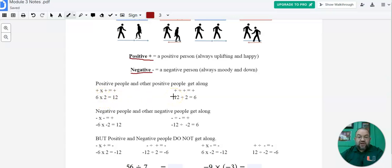Same thing with division. Positive 12 divided by positive 2 is 6, or 6 times 2 is 12. 12 divided by 2 is 6. We know that.